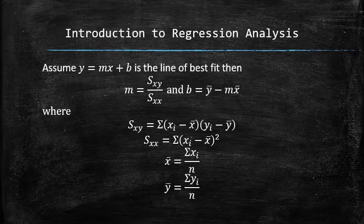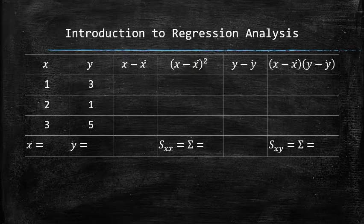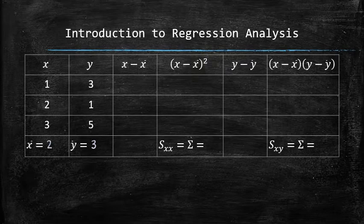The easiest way to organize the process is to set up the following template in the form of the table. First, we need to find the average input and output. x bar is 2 and y bar is 3. We subtract x bar from each value of x to fill out the third column. And then square each entry to get the fourth column.